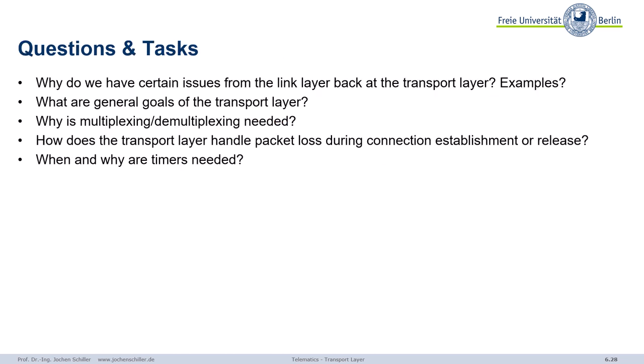Some review questions: What issues from the link layer reappear in the transport layer, and why? What are the goals of the transport layer? Why do we need multiplexing and demultiplexing — why can't we just forward data to the application? Why are connection establishment and connection release already so complicated? How do we handle packet loss? How do we handle a crashed server? And what is the role of timers — why do we need them?